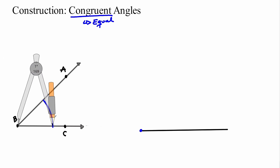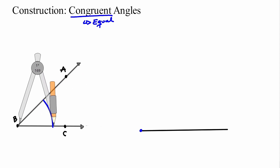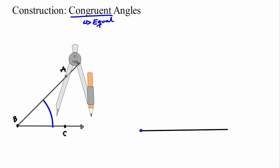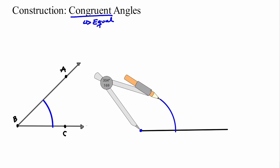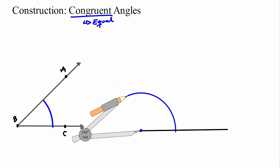Now, without changing the length of your compass, I want to do the same in the other angle that I'm creating on the right-hand side. Without changing the length of my compass, I'm going to move it — but notice that the metal leg is on angle B. I'm going to place it on the vertex of my other angle and recreate that same mark on my other arc. That's my second step.